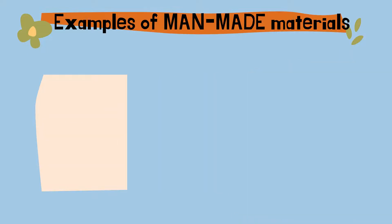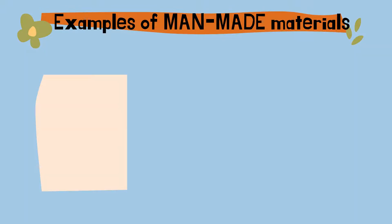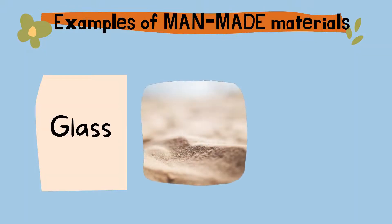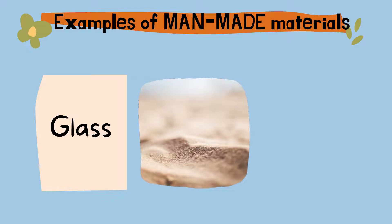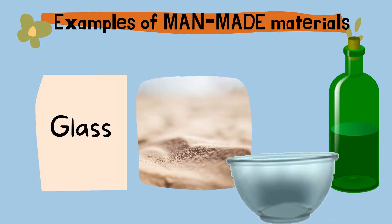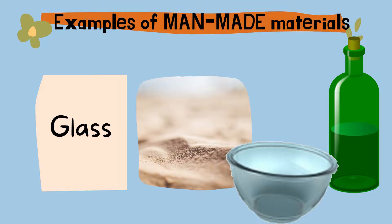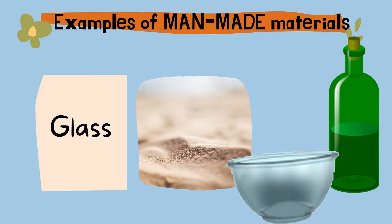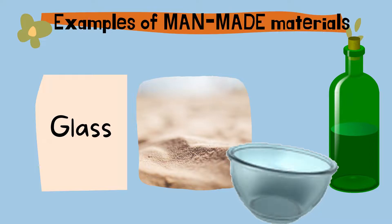The third man-made material is glass. Glass is made from sand and limestone. It is used to make things like glass bottles, glass bowls, and many other glass objects.